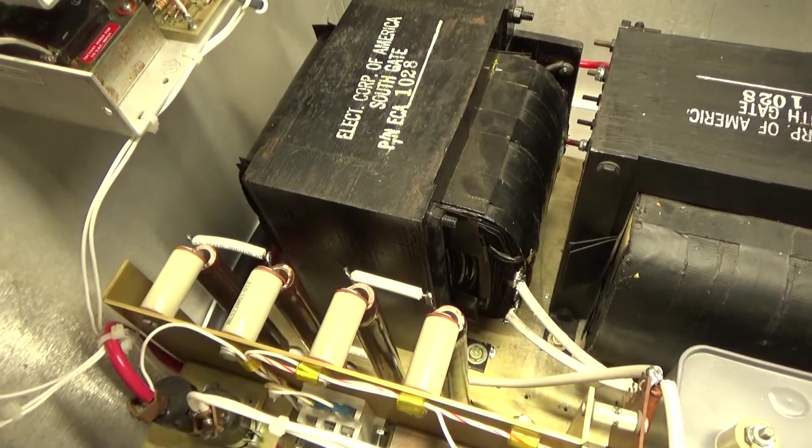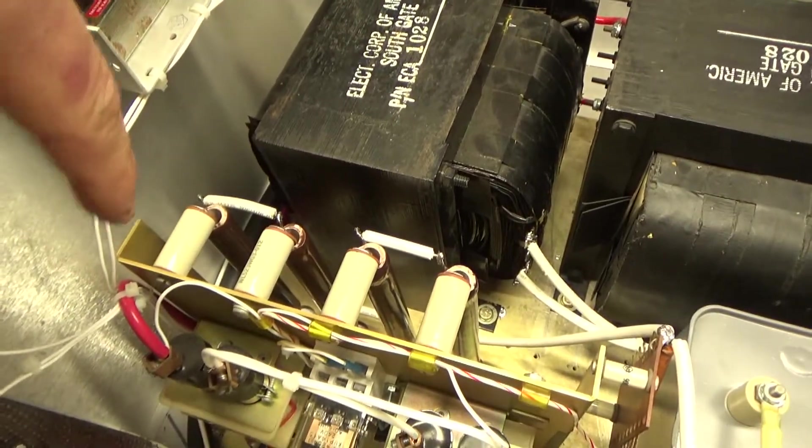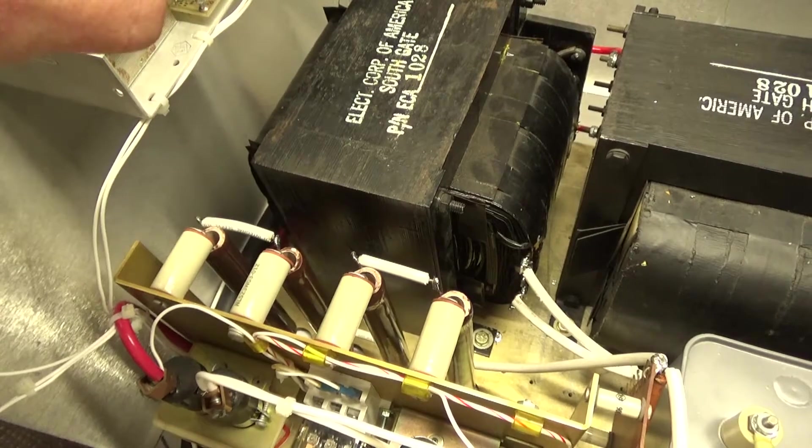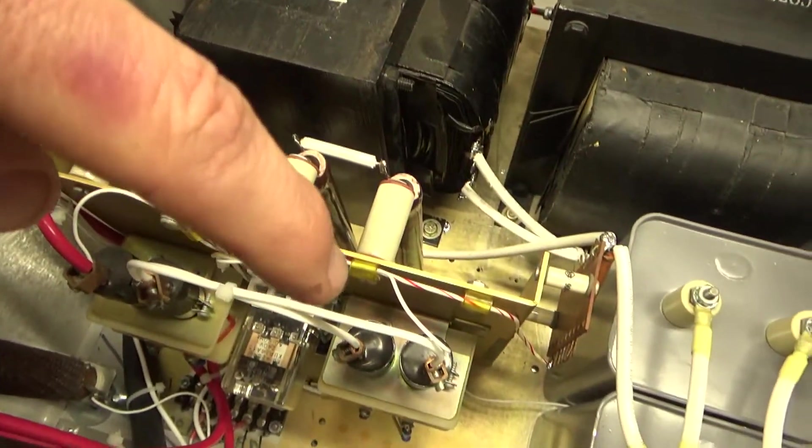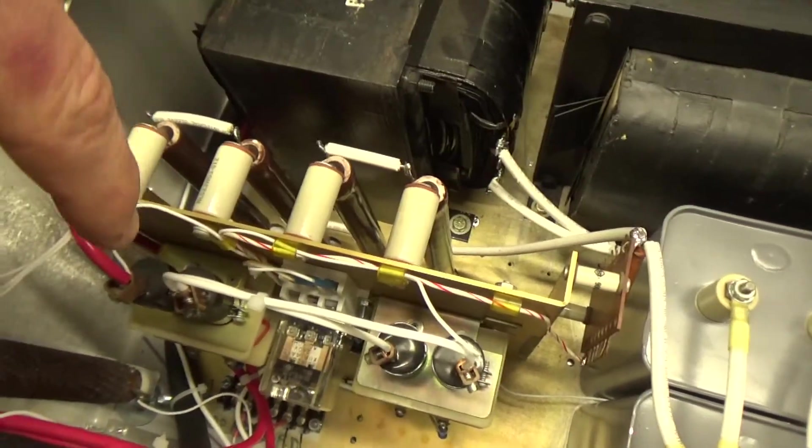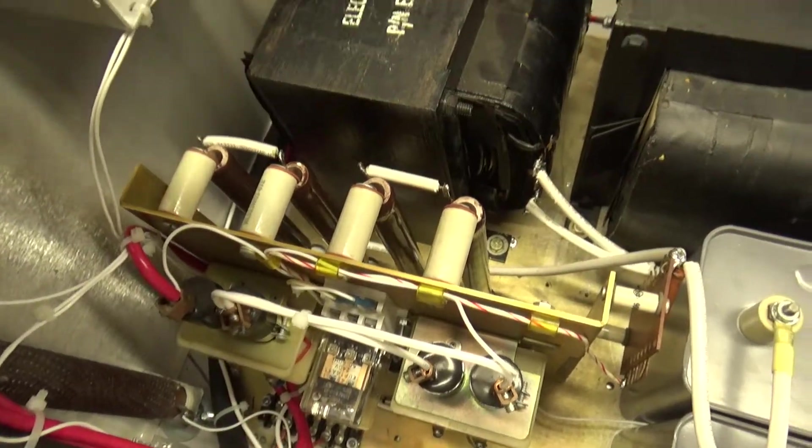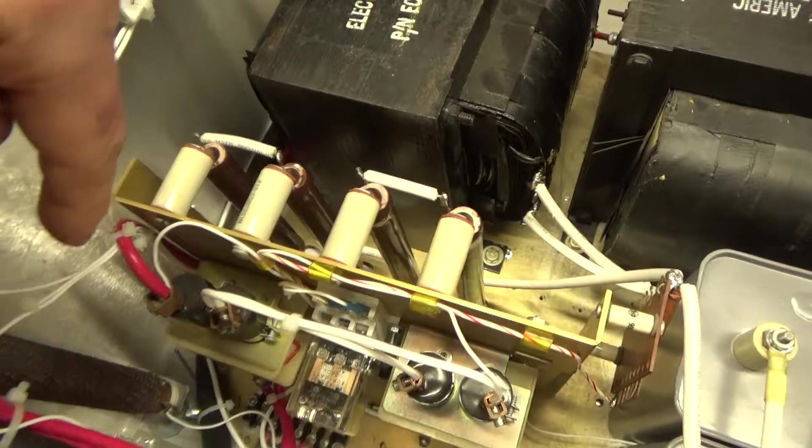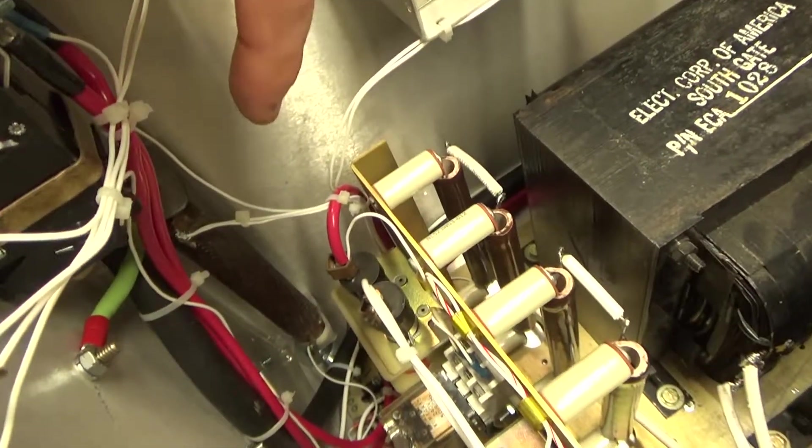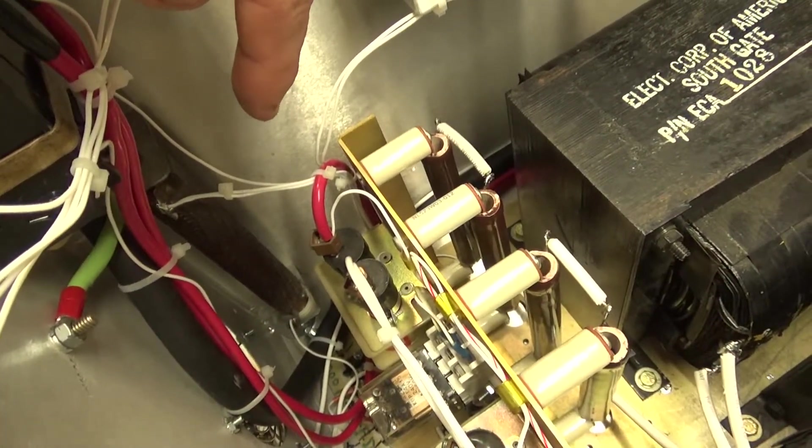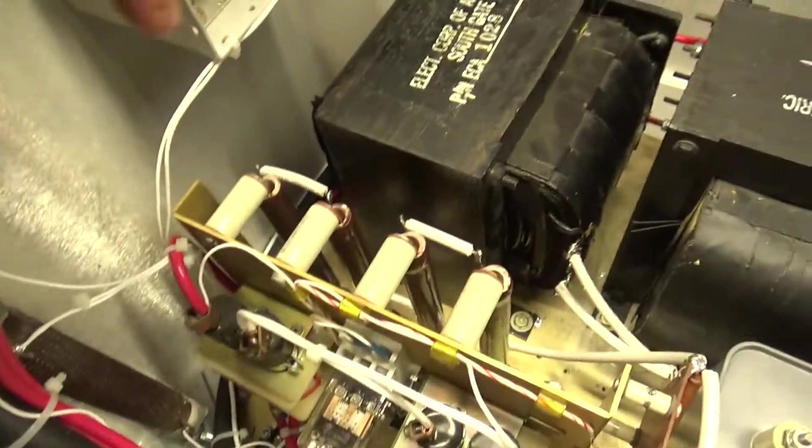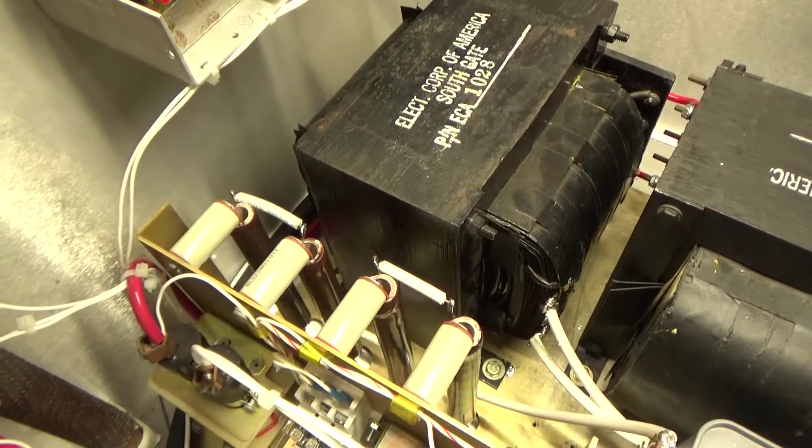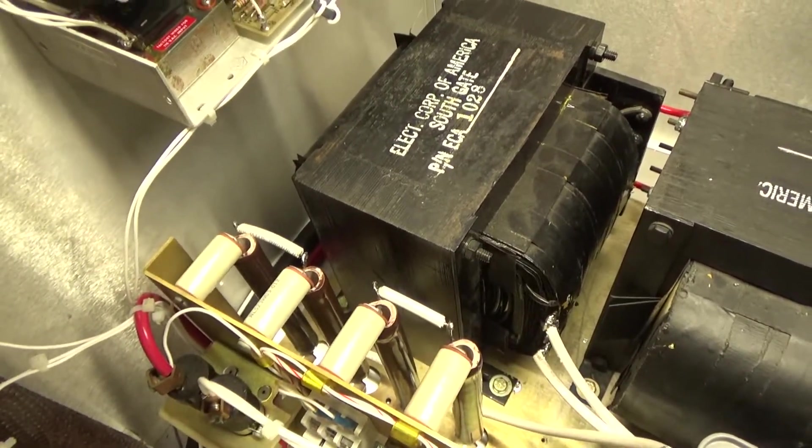Once again, the primary of the transformer is 240. One side of the primary gets the full 120. The other side of the primary goes to the second contactor, to one side of the 20 ohm resistor, and the opposite end of that resistor connects to the other side of the plate primary. At that junction, it also connects to the other side of the relay with the 240 coil.